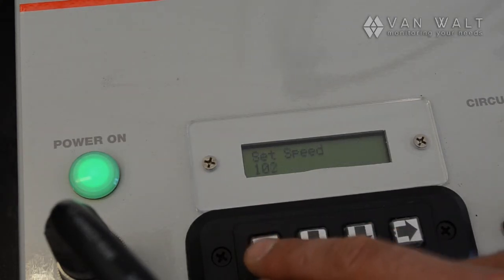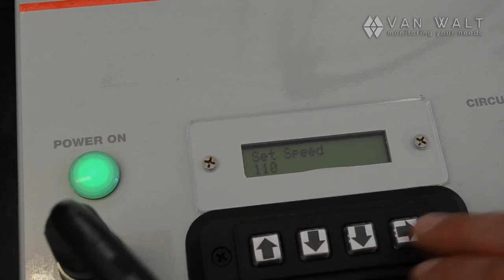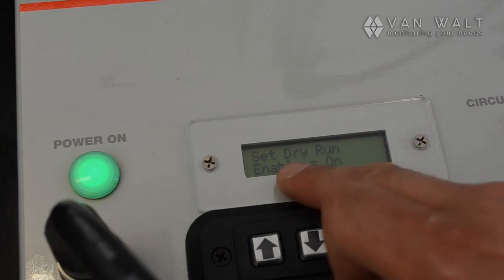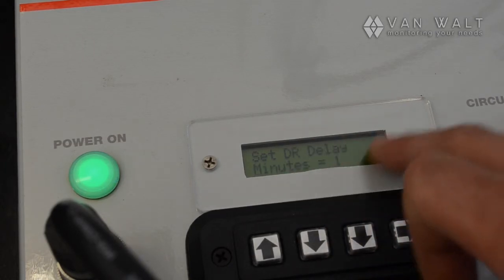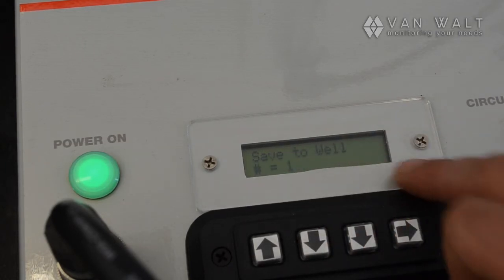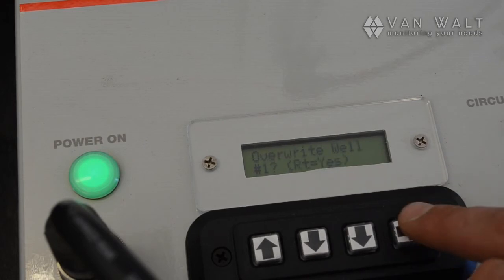So we're going to set speed. Let's set speed for 110. Okay. Enable dry run on. Yes. The delay one minute. And save to well one. All right. Yes. Okay, so now we're going to start.